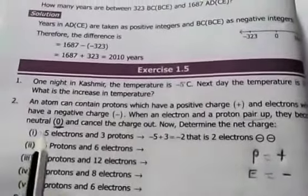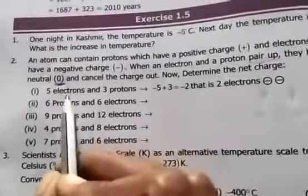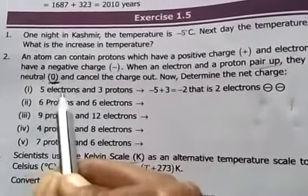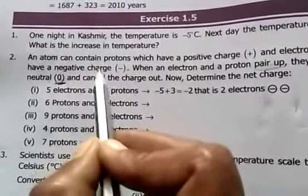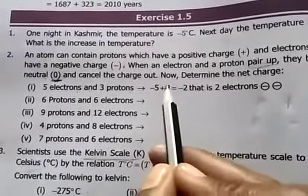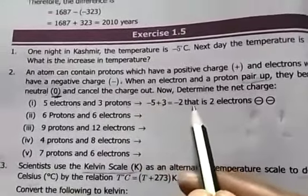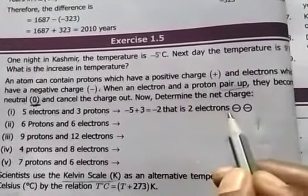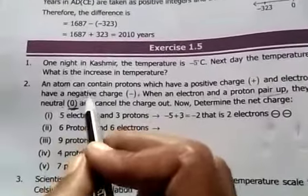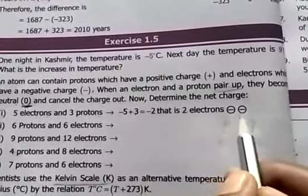First example: five electrons and three protons. Electrons have negative charge, so minus 5 plus 3 equals minus 2. So the net charge is minus 2, meaning 2 electrons. Second example: six protons and six electrons — plus 6 plus minus 6 equals zero, so the atom is neutral.